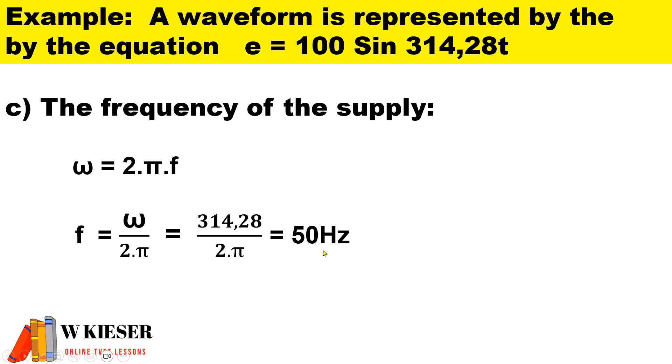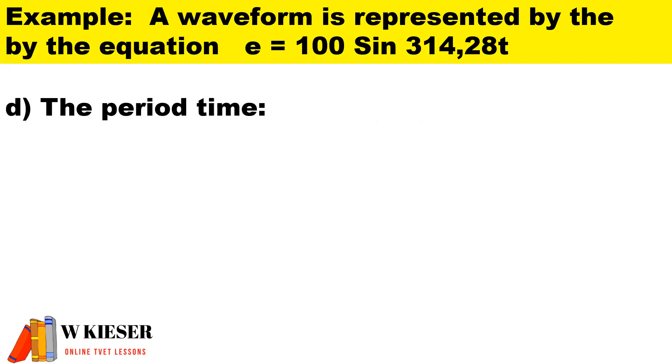This implies that we have 50 cycles completed in one second. To calculate the period or time, that's 1 over frequency, so it's 1 divided by 50 hertz, and that means it is 0.02 seconds.